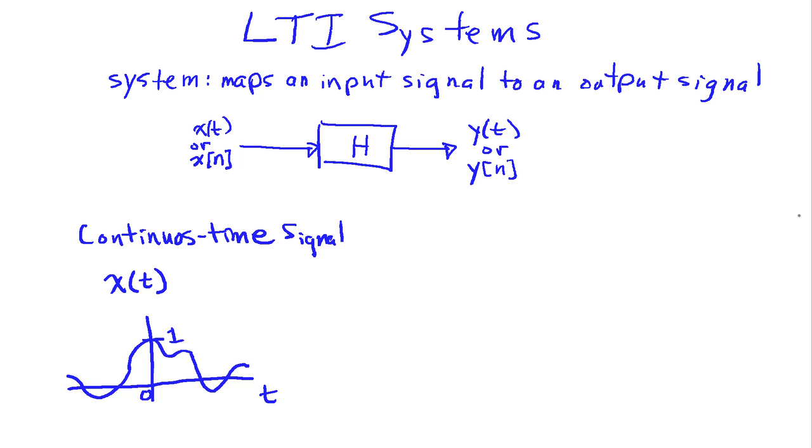In contrast, the discrete-time signal we're going to denote using square brackets, so we'll have X of N. Typically we'll use N or K as an index for the independent variable, and this is defined only on integer values of N.